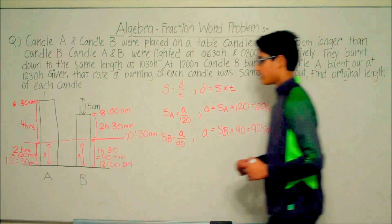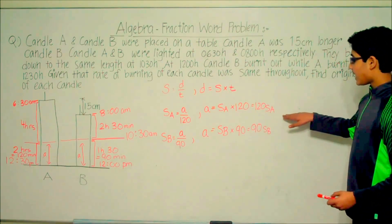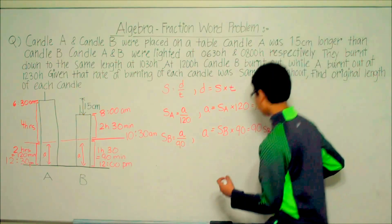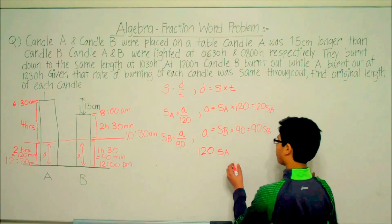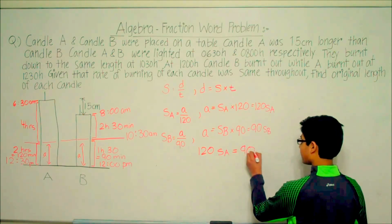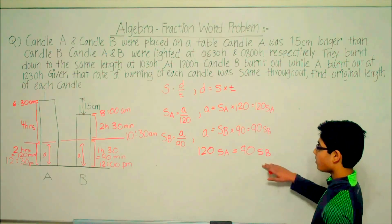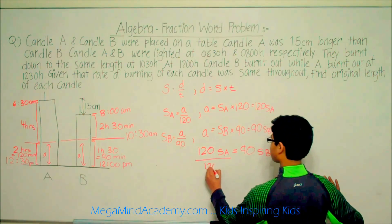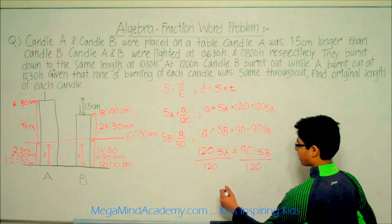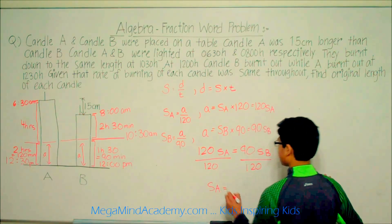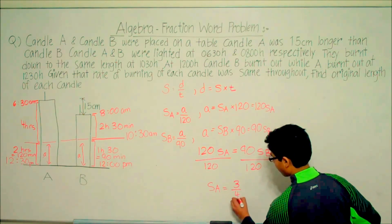We know that both distances A are equal, so 120·SA equals 90·SB. To get SA by itself, we divide both sides by 120. We get SA equals 90·SB divided by 120, which simplifies to SA equals three-fourths of SB.